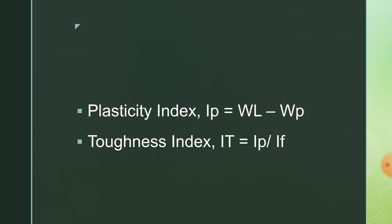Plasticity index IP equals WL minus WP, where WL is the liquid limit and WP is the plastic limit. Toughness index IT equals IP divided by IF, where IP is the plasticity index and IF is the flow index.